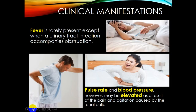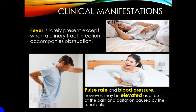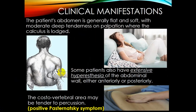Fever is rarely present unless a urinary tract infection accompanies obstruction. However, pulse rate and blood pressure may be elevated as a result of pain and agitation caused by renal colic. Also remember that not every patient presents with only one disease — secondary conditions such as arterial hypertension may accompany renal colic, so diagnostic and treatment methods must be tailored individually to the patient's state.